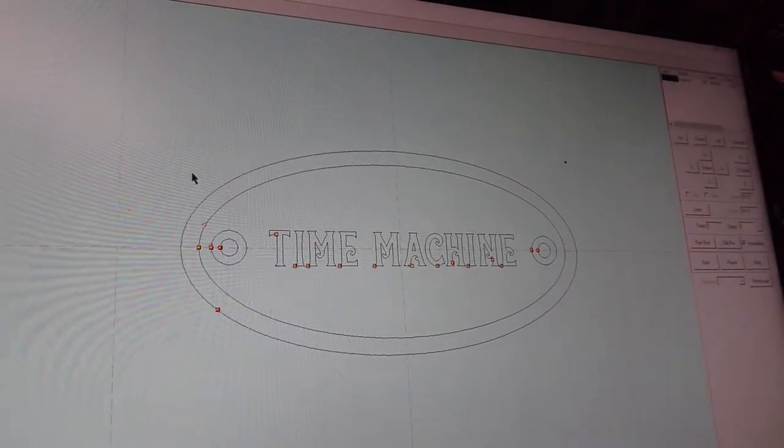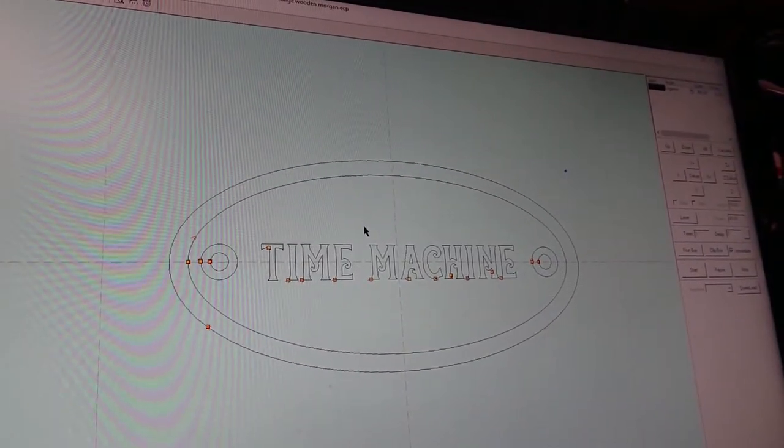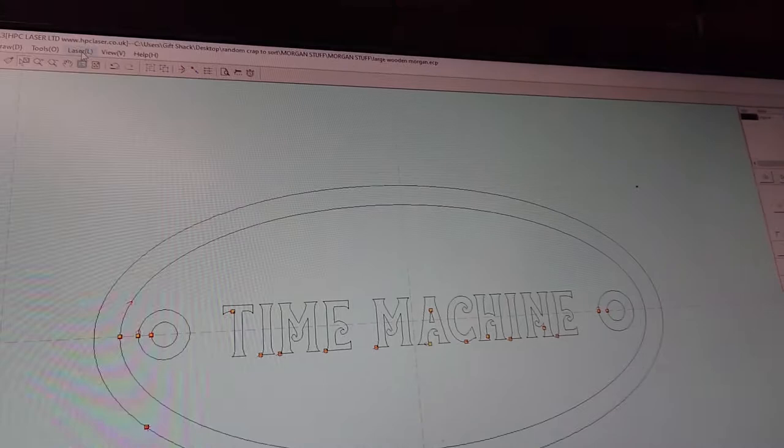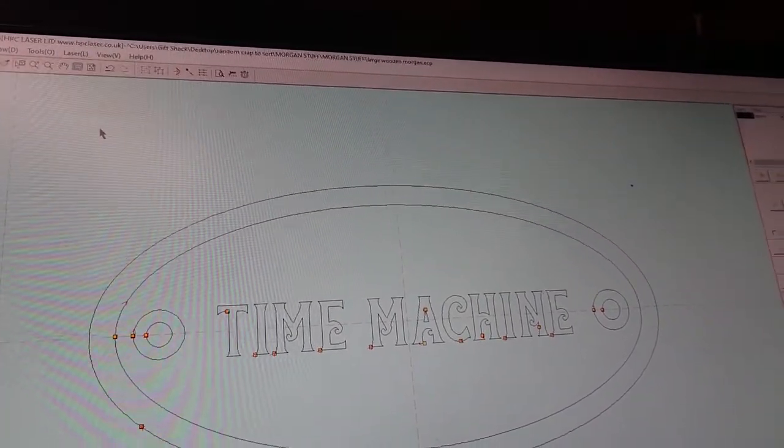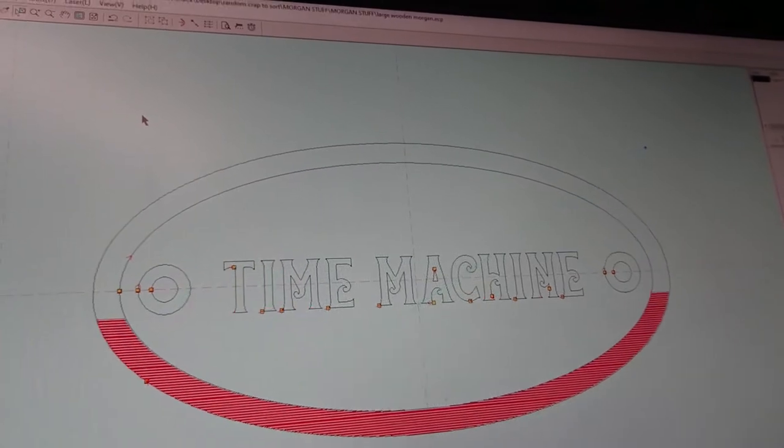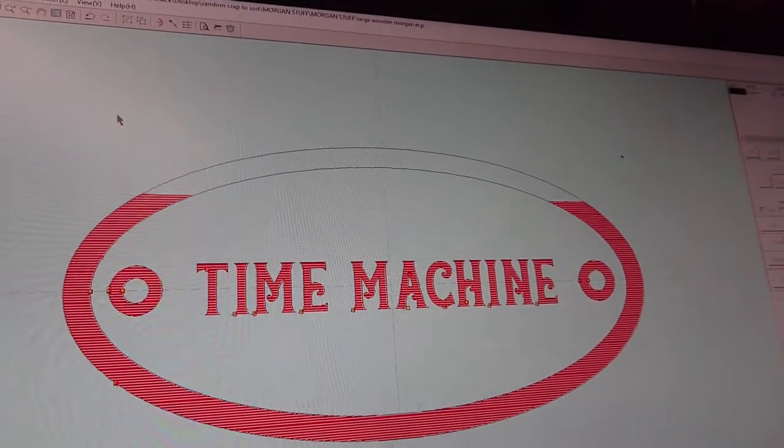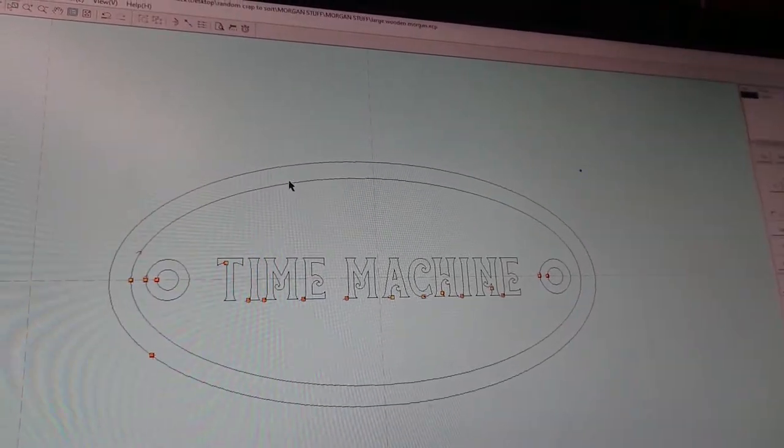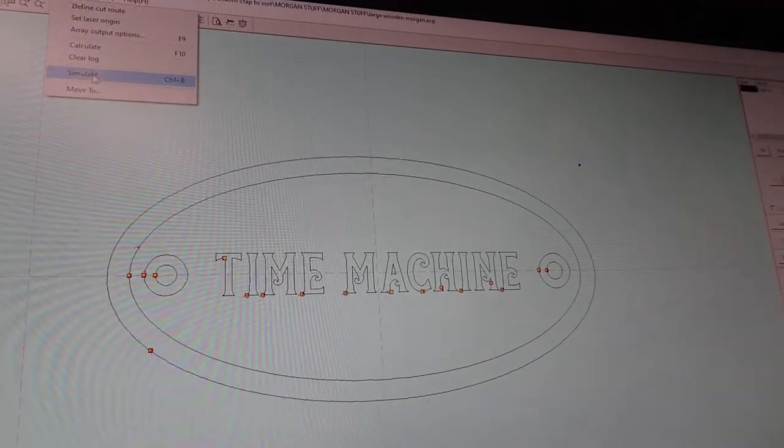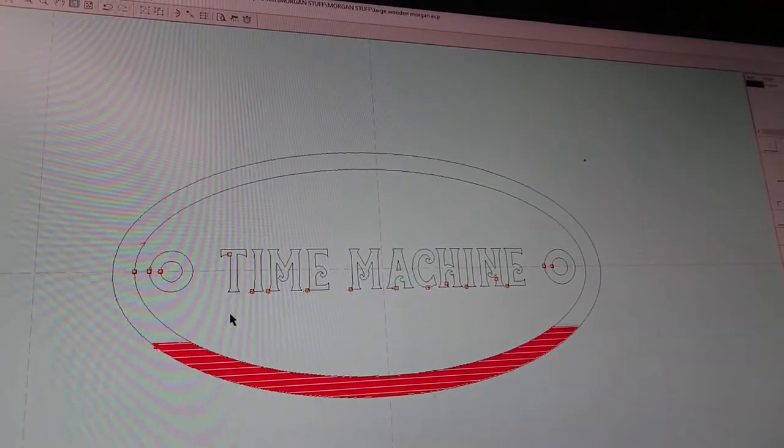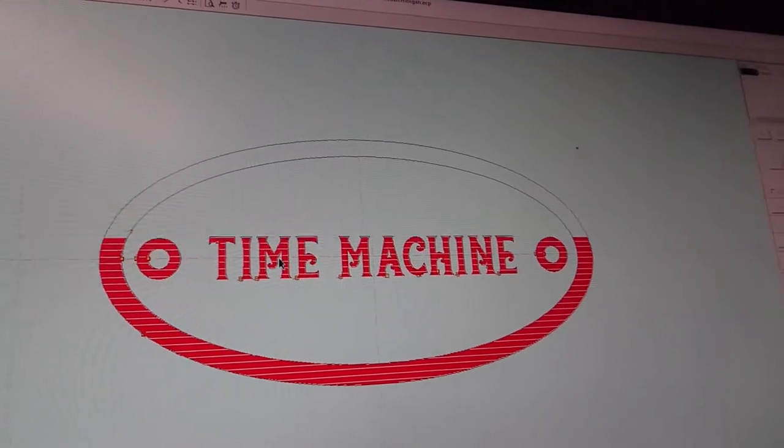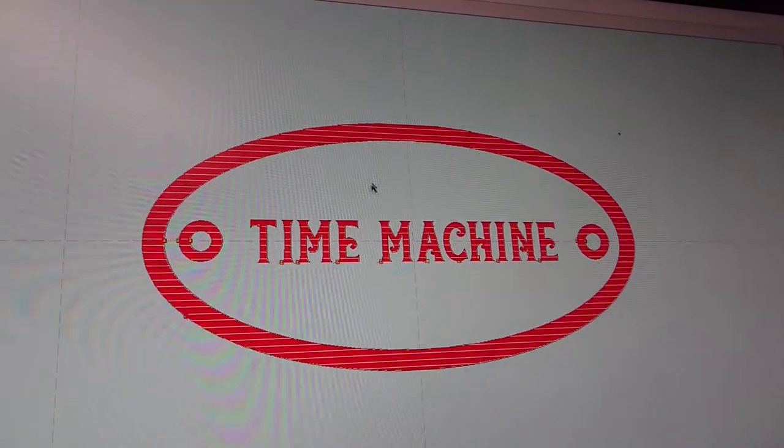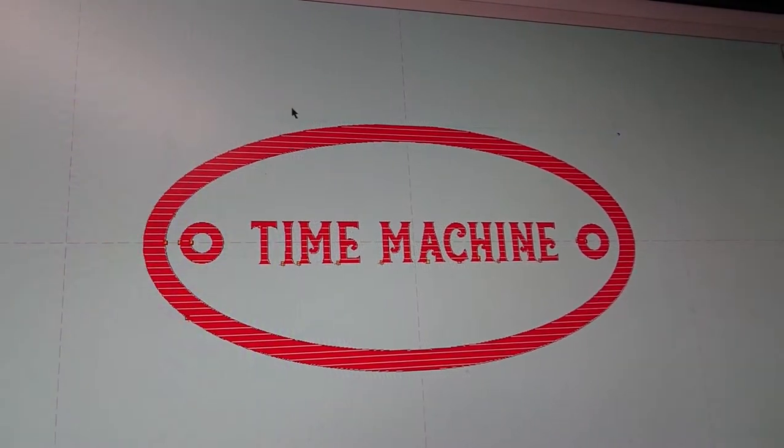Right folks, what we need to do now is make sure that this design when it's transferred over to the laser engraver cutter is going to engrave the correct area. So what I need to do is simulate the design I've got there. Now this is wrong because it wanted to engrave in the outer edge and the wording, but I want it to transpose that to have the time machine wording standing proud and this section here to be etched.